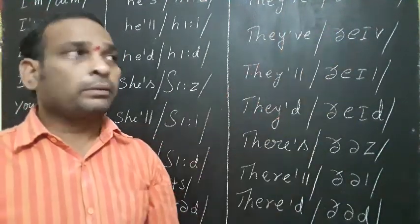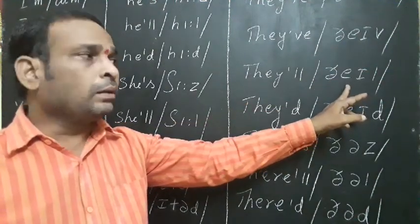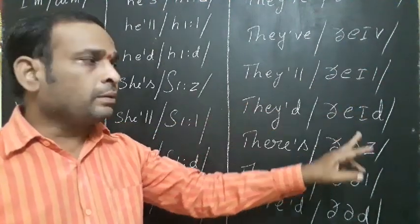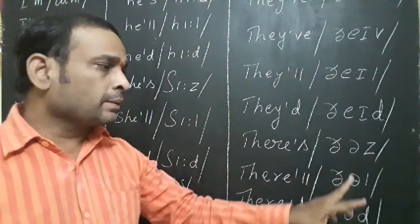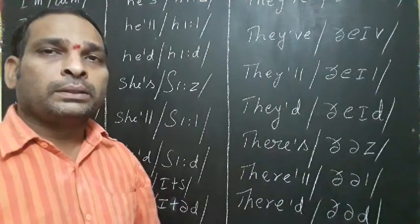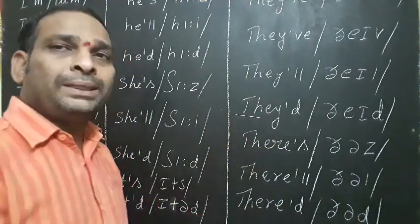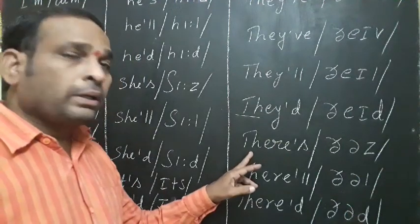are, there. Say: they're, they've, they'll, they'd. See here, up to here: they, they, here, there.